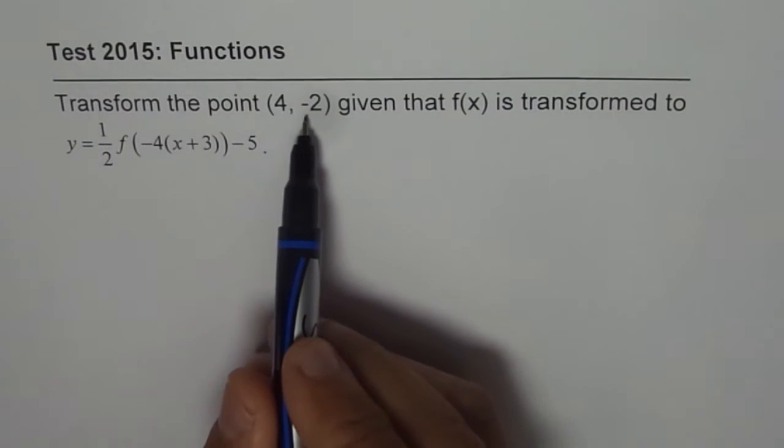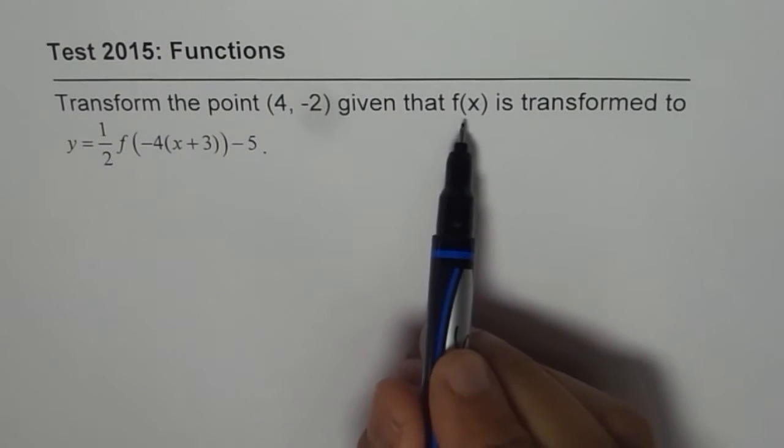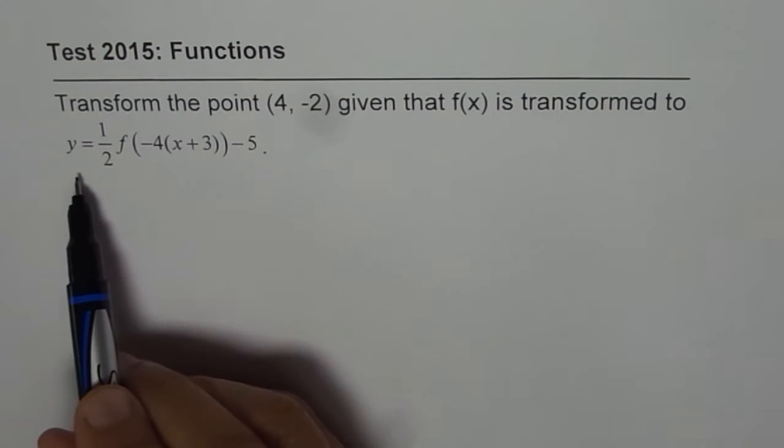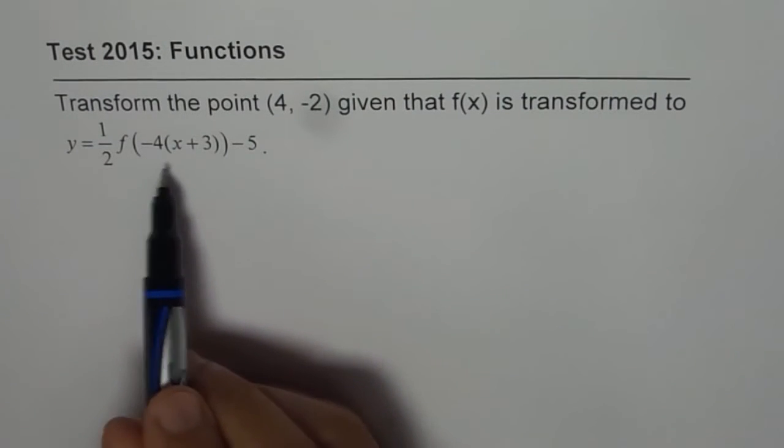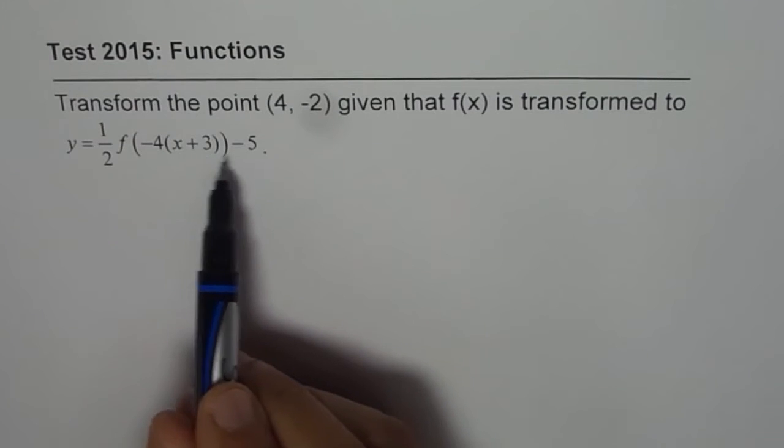Transform the point (4, -2) given that f(x) is transformed to y equals half of f within bracket minus 4 within bracket x plus 3 minus 5.